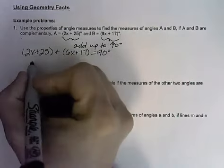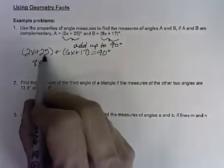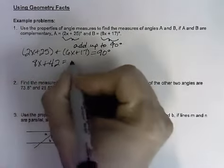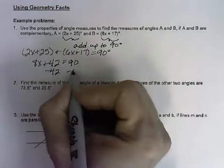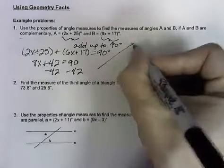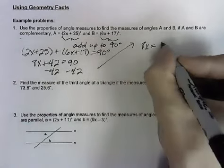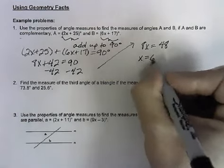From there, we would take this and solve it for x. We can combine our like terms, the 2x and the 6x to get 8x, and we can combine the 25 and the 17 to get 42. Then we can subtract 42 from each side. That's going to give us 8x is equal to 48, and then if we divide both sides by 8, we get x equals 6.